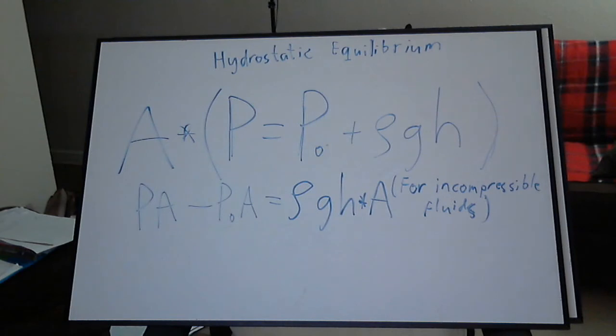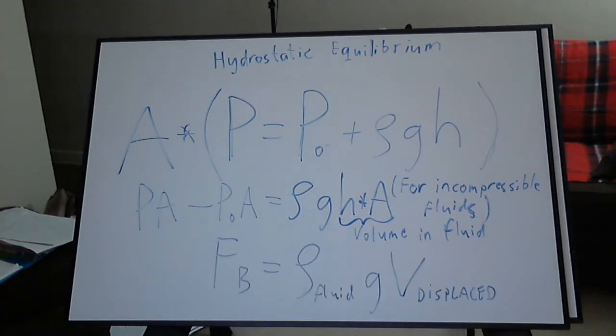We get the differential pressure force equal to the expression on the right, which includes the volume in the fluid. The volume of the object that is submerged in the fluid is known as the displaced volume.